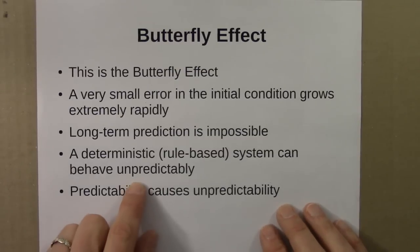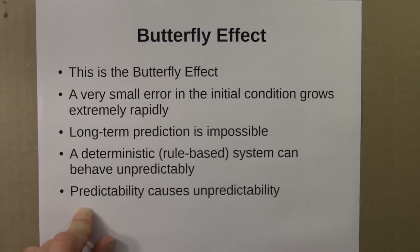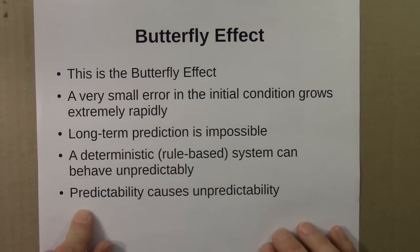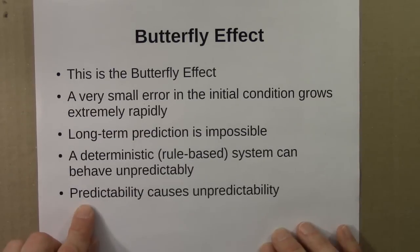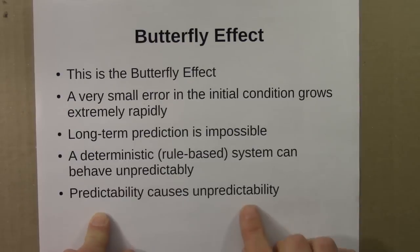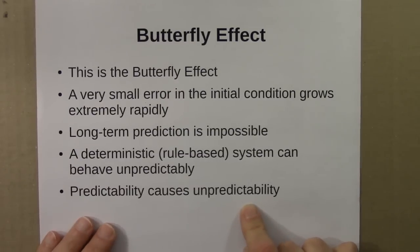In a sense, where does that unpredictability come from? This is perhaps oversimplifying a little bit, but the predictability of the rule, the rule is so deterministic, it depends so much on the initial condition, that it requires impossible accuracy, almost meaningless accuracy, in that initial condition to be able to do prediction. The predictability, or the determinism, or the sensitive dependence on initial conditions, is what causes unpredictability in systems like this that show the butterfly effect.